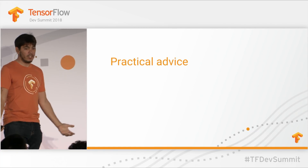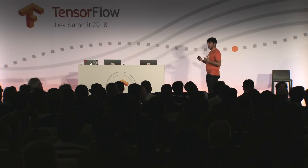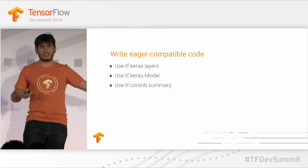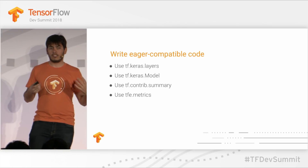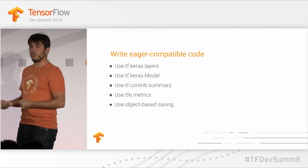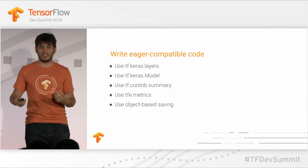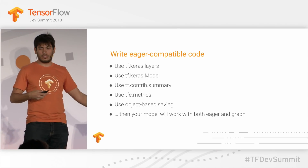Here's some practical advice: write code that works well both when executing eagerly and when building graphs. Use the Keras layers — they're object-oriented, Pythonic, easy to understand and manipulate. Use the Keras model to stitch layers together for saving, loading, and training. Use tf.contrib.summary instead of tf.summary — they'll move to the TensorBoard open source package very soon. Use tfe.metrics instead of tf.metrics because these are object-oriented and friendlier in eager. Use object-based saving. If you do all of this, it's highly likely your code will work well in both eager execution and graph building.